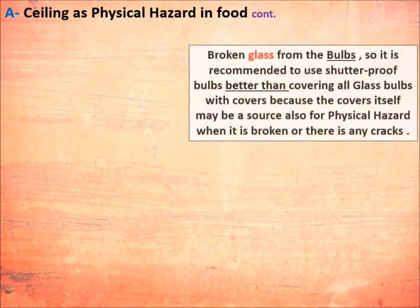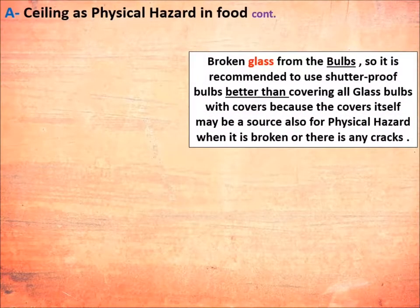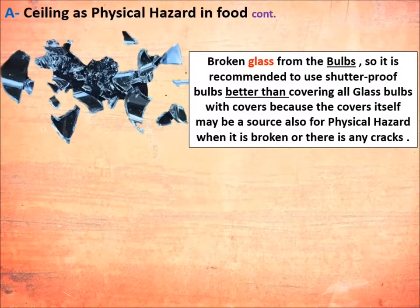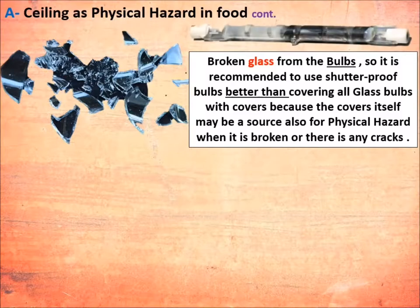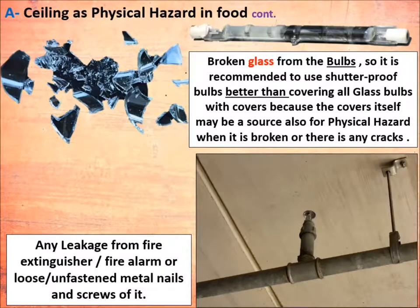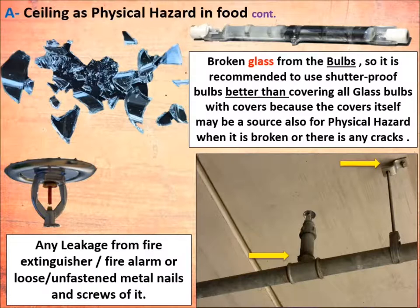Another physical hazard on food from the ceiling is broken glass from bulbs. It is recommended to use shatter-proof bulbs rather than covering all glass bulbs with covers, because any broken parts from these covers also form a physical hazard on food.